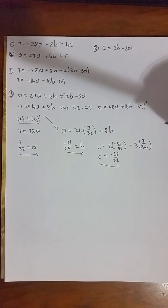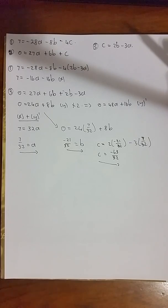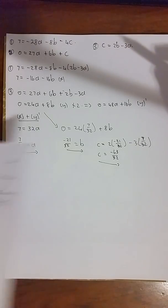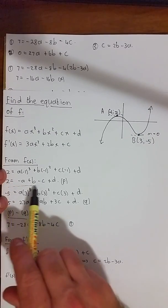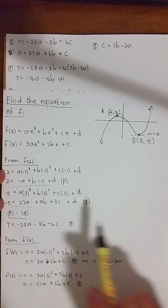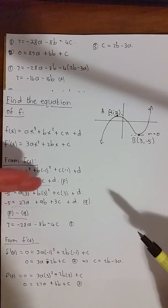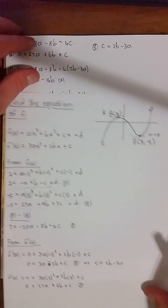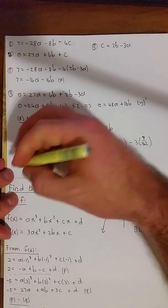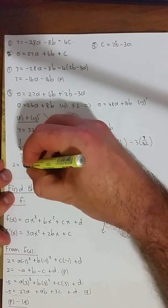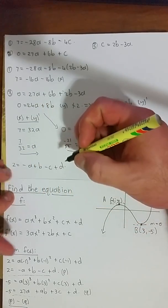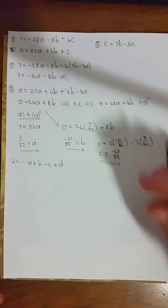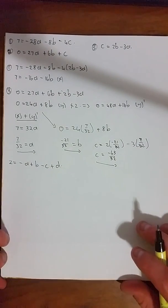All we have left to solve now is the d value. So that d value, we can just take one of these two equations. Either equation p or equation q, because that's got an a, b, c, and a d in. The equation p looks pretty simple. So let's write that down. We have 2 = -a + b - c + d. And we have solved for a, b, and c, so we just need d.